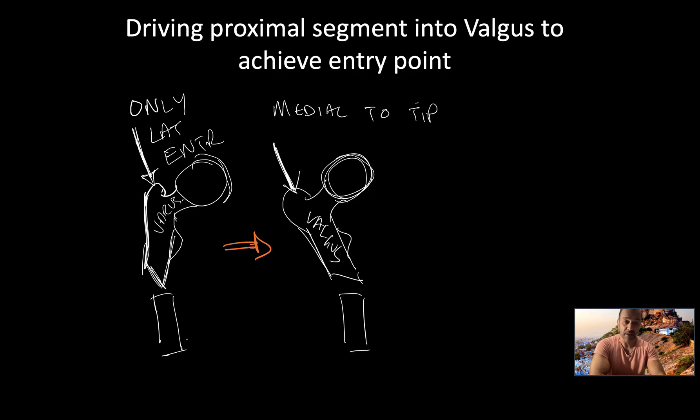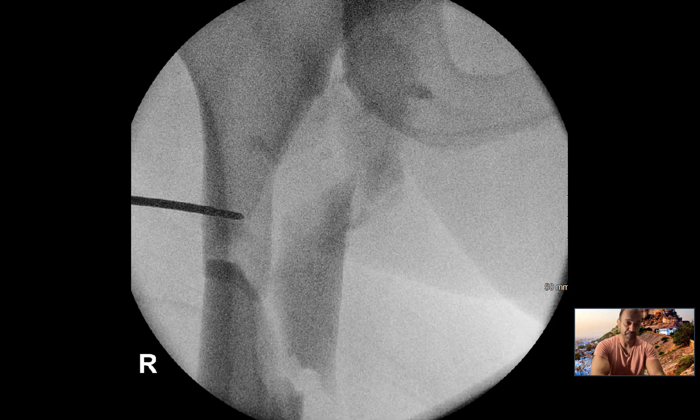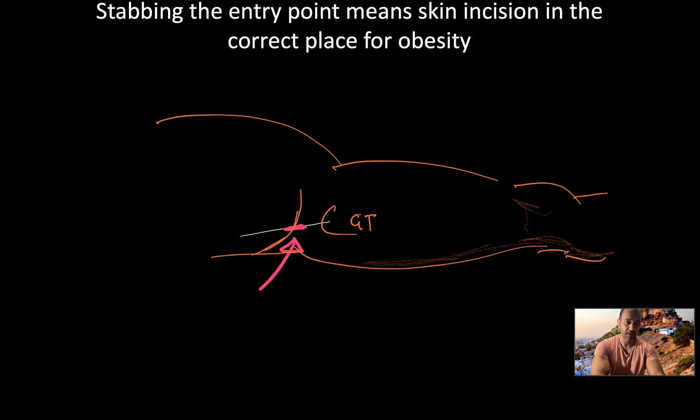Sometimes to get that key entry point, I'll drive the proximal segment into valgus by using a shantz pin or a guide wire to push it further. Valgus is allowing me to get my entry point correct. Similarly, to get a good entry point, especially in the obese or larger patients, I'll just stab my guide wire in and get it in the right position under x-ray before I make an incision. Give it a few taps with a mallet so it's well anchored and then proceed from there. Therefore, my incision is in the correct place for that femoral nail to go in.